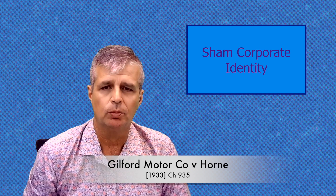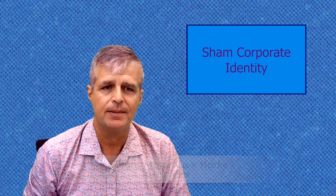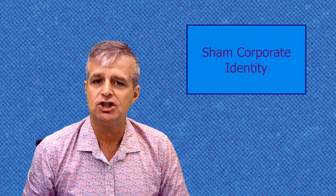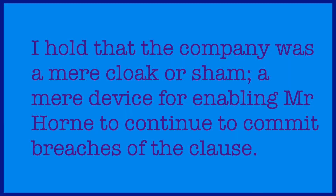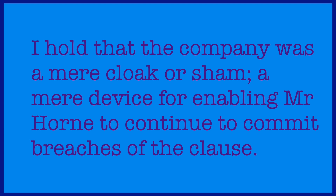The sham situation is best seen in Gifford Motors v Horne. Gifford Motors sold cars and car parts. Horne was hired as their managing director and his contract included a requirement that he was not allowed to compete with Gifford or poach their customers. He got the sack and immediately commenced a new company which he owned, initially called EB Horn & Co., then changed to JM Horn & Co. — his wife's initials. Under that company name, he began selling Gifford parts to Gifford customers. When Gifford complained, he said the company JM Horn & Co. was poaching the customers, not him. The court wasn't fooled — Lord Justice Handworth said the company was a mere cloak or sham, a mere device for enabling Mr Horn to continue to commit breaches of the clause.